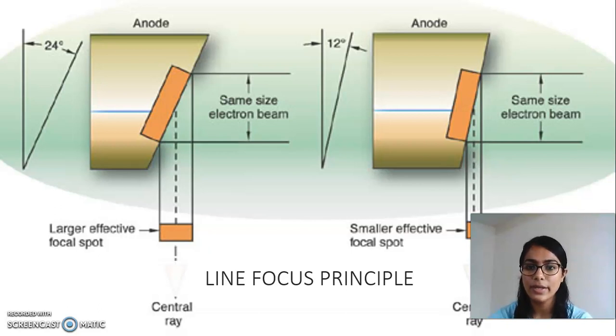The anode angle varies from manufacturer to manufacturer of the x-ray tube. Usually approximately 6 degree to 20 degree angulation of the anode angle is maintained.